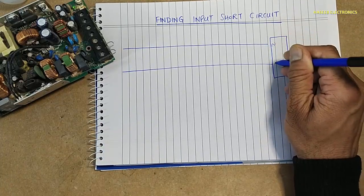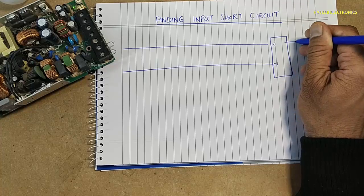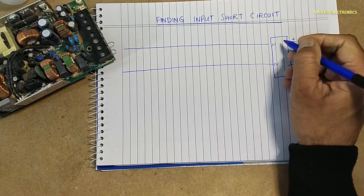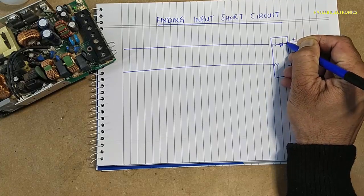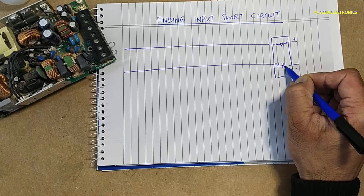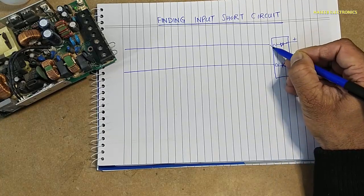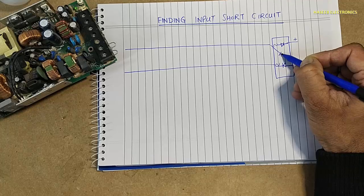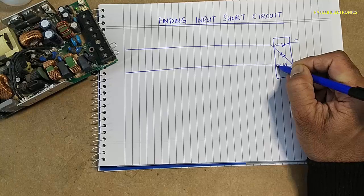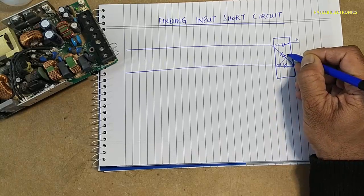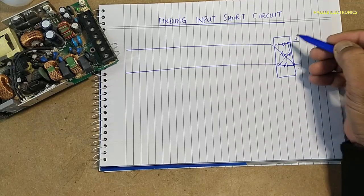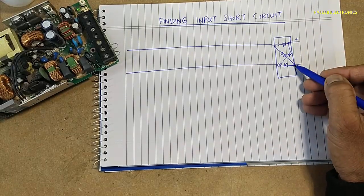AC input goes into the bridge rectifier, from which we take positive and negative outputs. If we look closely, this is the bridge rectifier — two cathodes are common and two anodes are common.